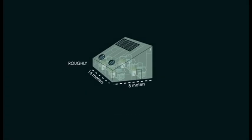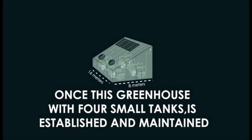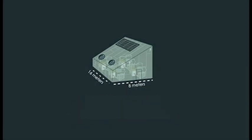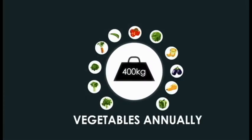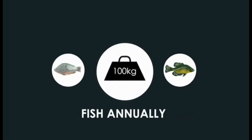A small greenhouse with 52 by 26 foot and with four small tanks when it's established and maintained can produce up to 400 kilograms or 880 pounds of vegetables, 220 pounds of fish annually.